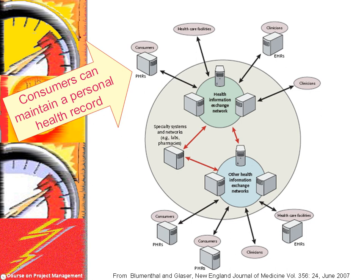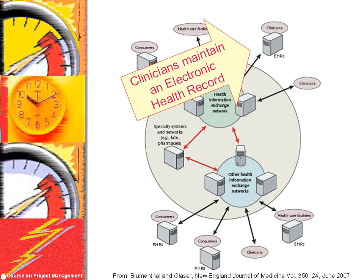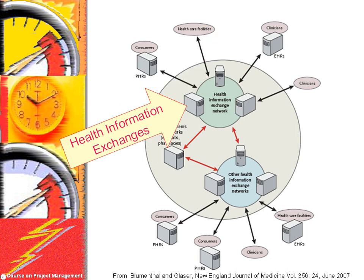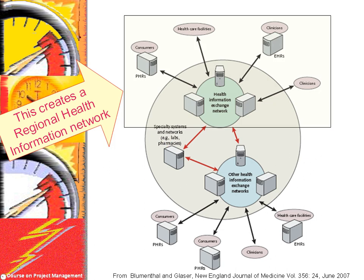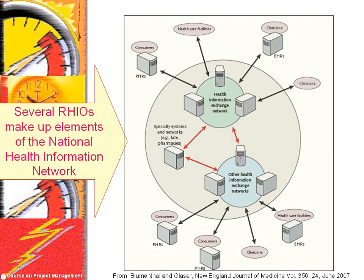Consumers can maintain a personal health record, as shown here in this visual. Clinicians maintain an electronic health record, which keeps information from multiple sources within the organization and allows for information about the patient. Health information exchanges allow the transfer of information among various clinicians from different organizations. This creates a regional health information network. Several regional health information networks make up elements of a national health information network.